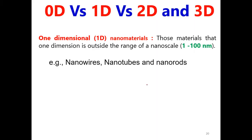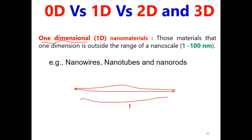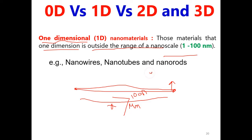The second class of nanomaterials we call one-dimensional. One-dimensional means those materials where, for example, in a nanowire the length is beyond the nanoscale — it is in micrometers along the x-axis. But if you look at the y-axis and z-axis, they are very small. So one-dimensional materials are those whose one dimension is out of the nanoscale range, meaning the x-axis is greater than 100 nanometers, while the rest two dimensions are well below the nanoscale.